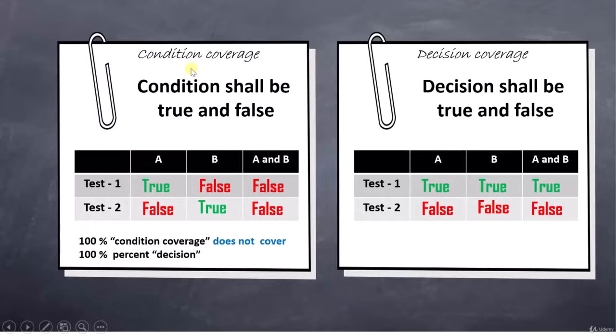So for condition coverage, we say that condition shall be true and false, whereas for decision coverage, the decision has to be true and false. And for that we had these two tables. For condition coverage, the condition A was made true and false, similarly condition B was made false and true. When we chose these two conditions, that time our decision was always false.